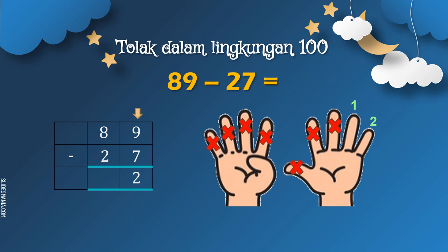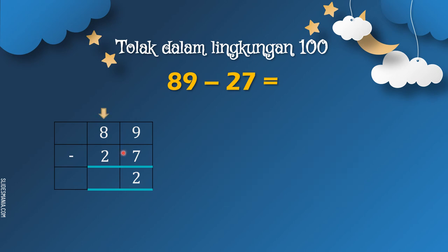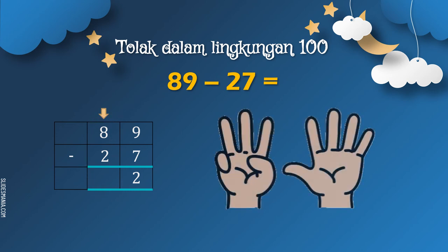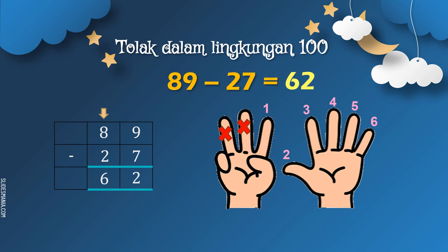Kita selesaikan di bahagian rumah puluh pula, iaitu 8 tolak 2. Kita buka 8 jari. Sekarang kita tolakkan dengan 2 — tutupkan 2: 1, 2. Sekarang kita kira berapa lagi jari yang tinggal: 1, 2, 3, 4, 5, 6. Jadi, 8 tolak 2 sama dengan 6. Jadi, jawapan 89 tolak 27 sama dengan 62.